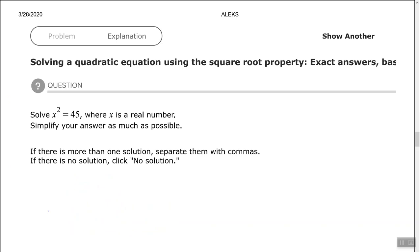On this one we have x squared equals 45. So again, x squared equals 45. We want to undo the square by finding the square root of each side.